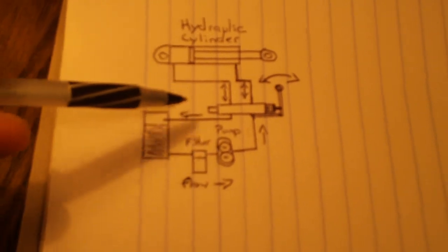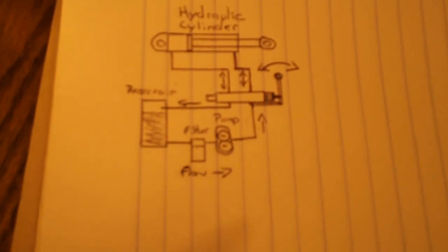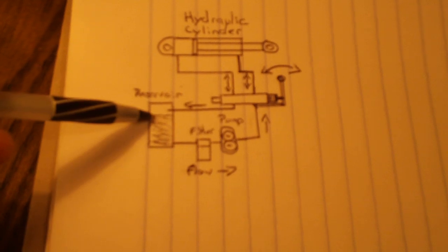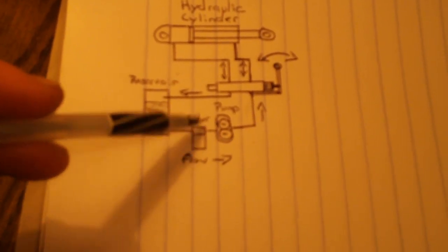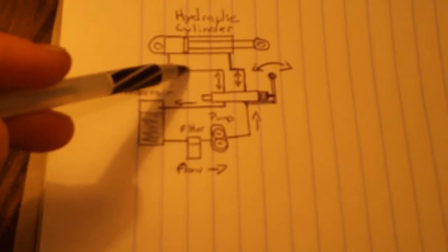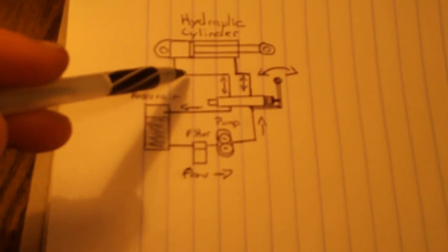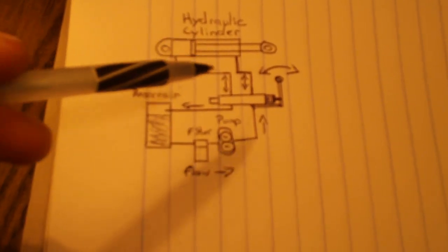Now, modern hydraulics, there's multiple cylinders, multiple valves, usually just a central reservoir, and there might be multiple pumps, multiple filters, hydraulic lines going everywhere. They use steel lines, and then they also use a rubber-type flexible line.